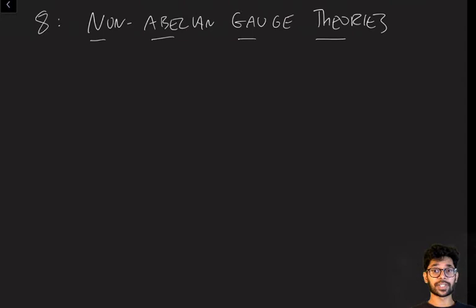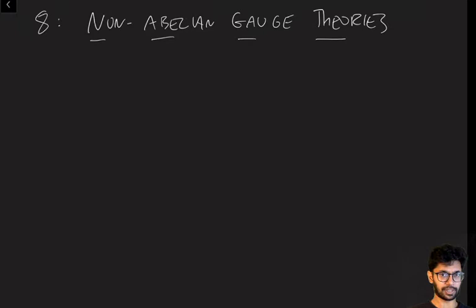We're now ready for the very final topic in the course, which is non-Abelian Gauge Theory. This is a really surprisingly powerful generalization of the basic ideas we discussed in the last lecture. In particular, this forms a really important part of our most microscopic understanding of physics, or of the standard model. So now we're going to understand what exactly non-Abelian Gauge Theory is, and how we can write down its action and calculate things in it. To understand non-Abelian Gauge Theories, we first have to understand the idea of non-Abelian Gauge Invariance.